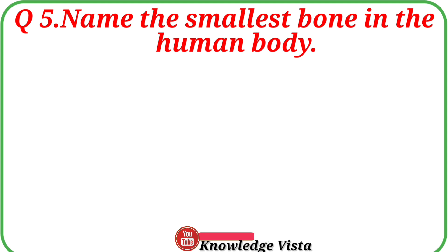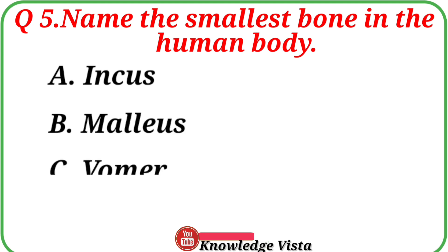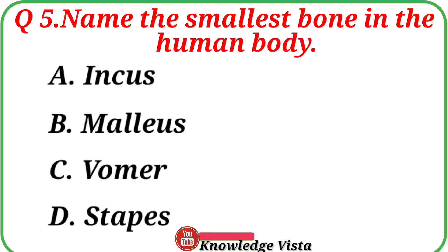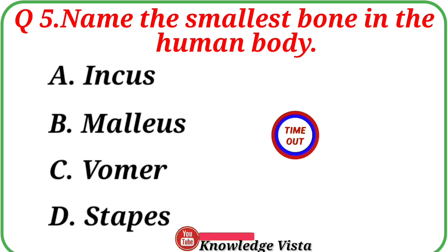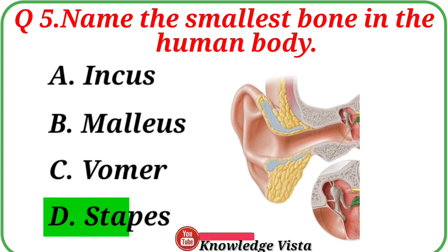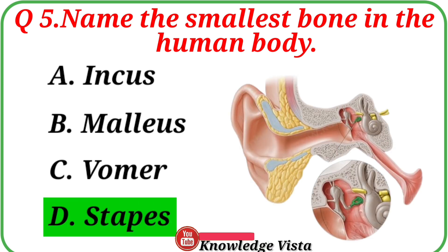Question number 5: Name the smallest bone in the human body. Your options are: A. Incus, B. Malleus, C. Wormian, D. Stapes. Correct answer is option D, Stapes. Stapes is the smallest bone in the human body.